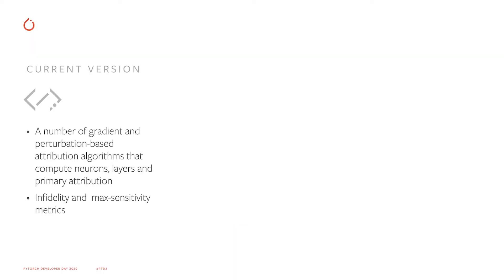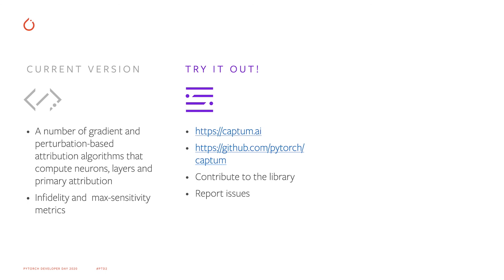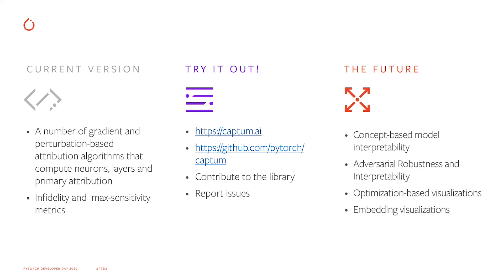To recap, I talked about three releases of the Captum library, the attribution algorithms we currently offer, and the two metrics: infidelity and maximum sensitivity. I'd like to invite you to check out our website captum.ai and our GitHub page at github.com/pytorch/captum. Please make contributions and report any issues. I also discussed future directions including concept-based interpretability, adversarial robustness, optimization-based visualizations, and embedding visualizations.